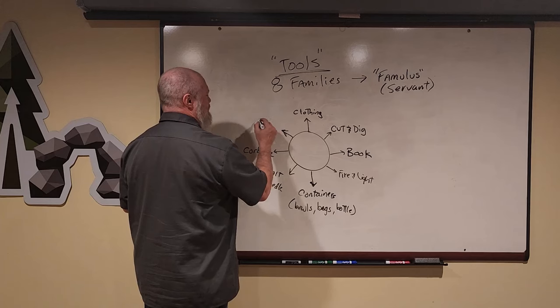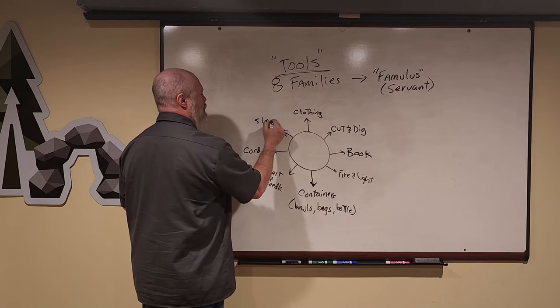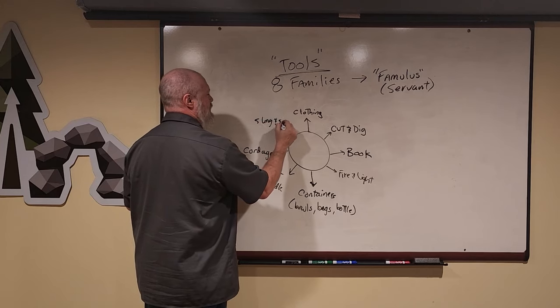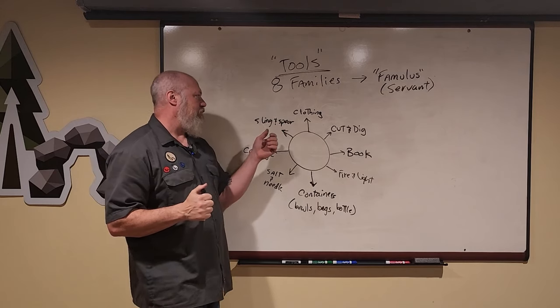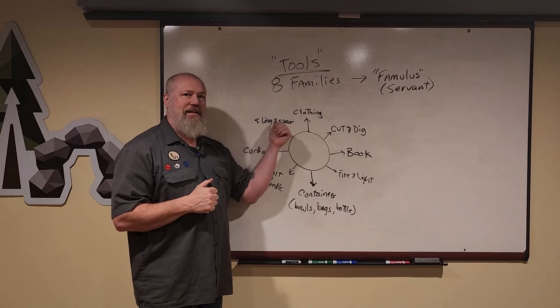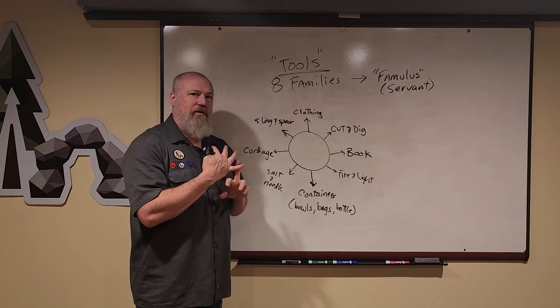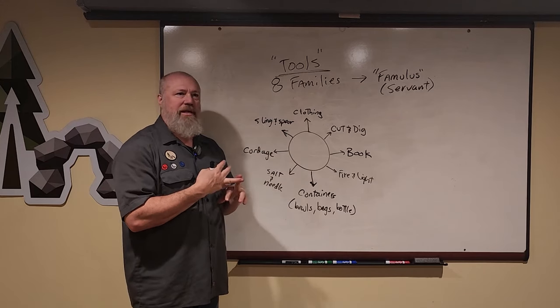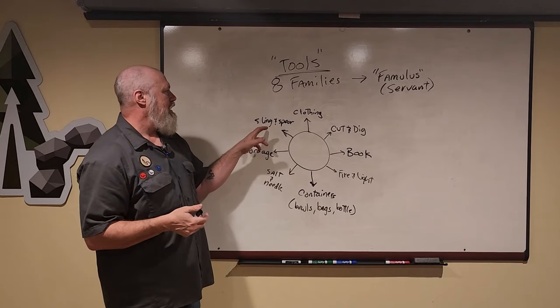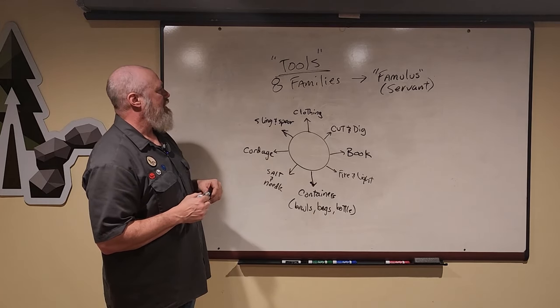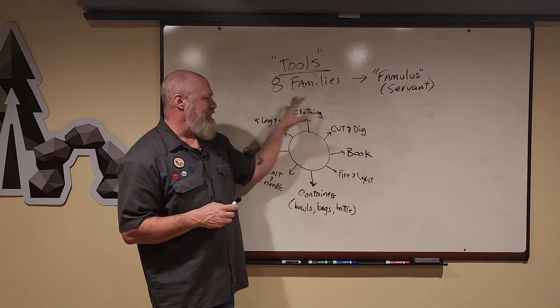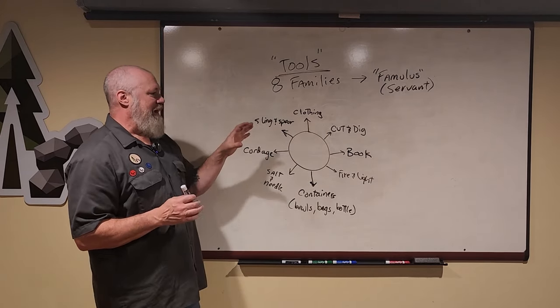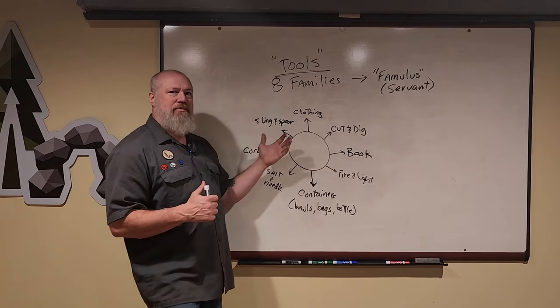And then the last expanded family of tools is the sling and spear. And these are the family of tools represented by the archetype of the sling and the spear, to protect yourself from predators, from other human beings, and to procure food through hunting. And these are the eight families of tools from famulus to servant. Uncivilized Vitality uses these families and certain archetypes of tools.